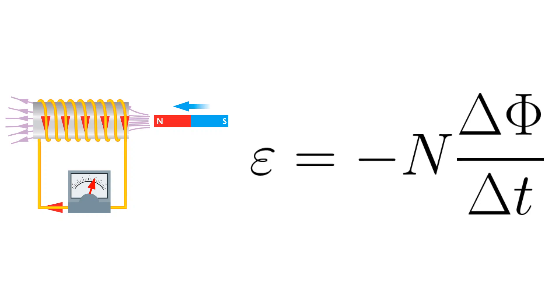This is the equation for Faraday's law of induction: n is the number of turns, delta f is the change in flux, and delta t is the change in time.